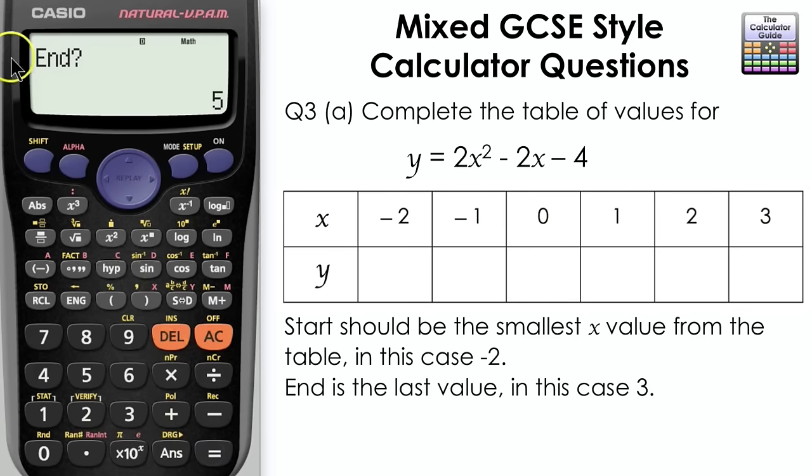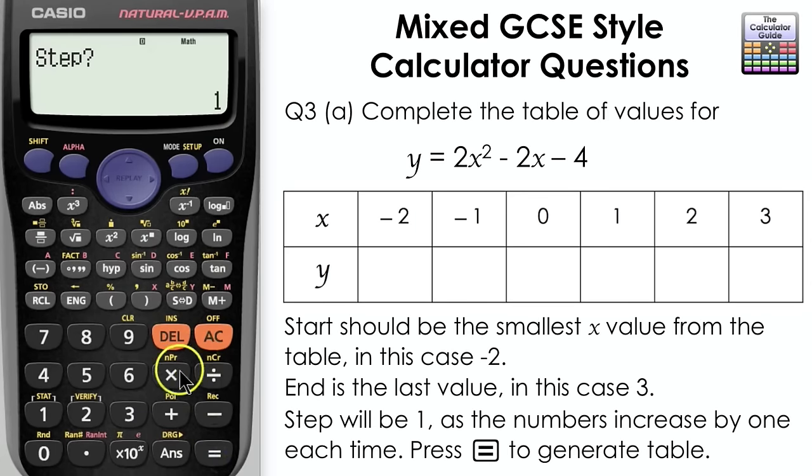End is the last value in our table, which in this case is 3. Step is how much the numbers increase each time, and in this example they're increasing by 1, so the step is 1. Press equals to generate the table.